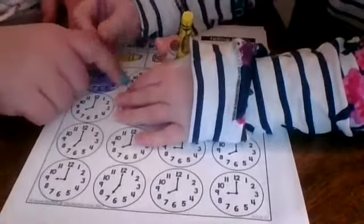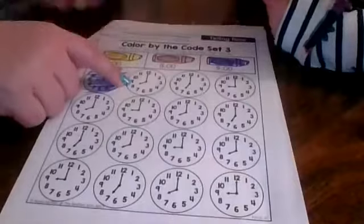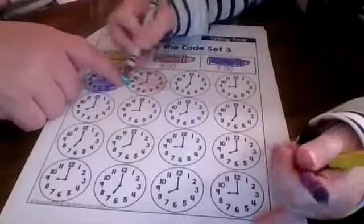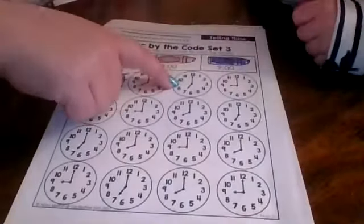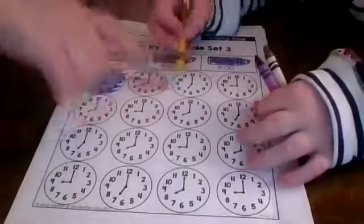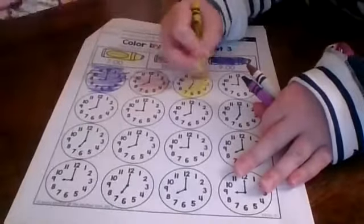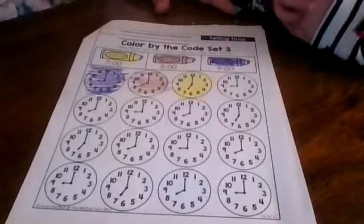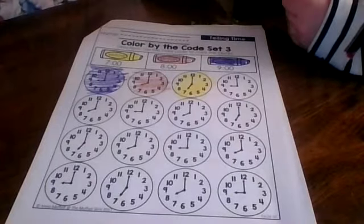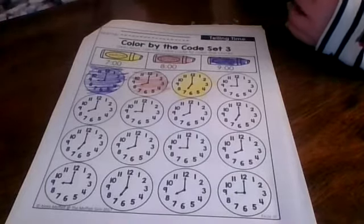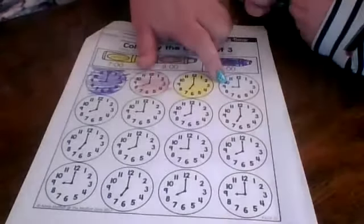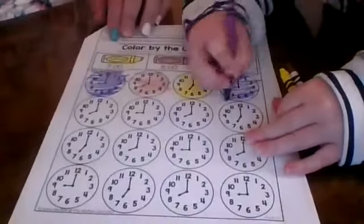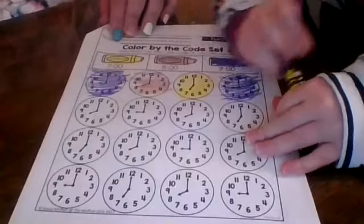What time does this clock say? Eight o'clock, so we're going to color it... okay, purple. Good. What time does this clock say? Eight o'clock, so we're gonna color it what color? Brown. Brown. And what time does this one say? Seven o'clock, so we're gonna color it yellow. Nine o'clock, so it's going to be what color? Purple.